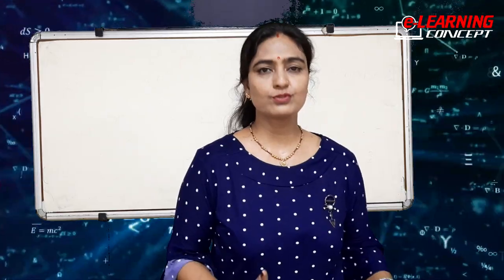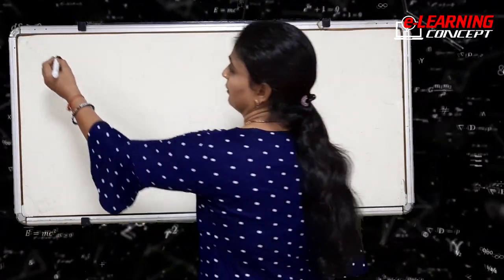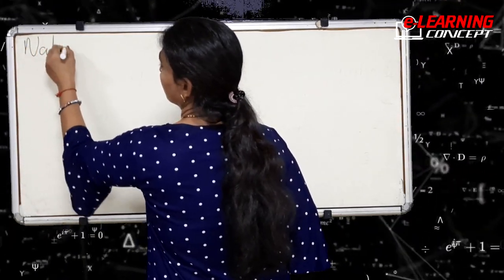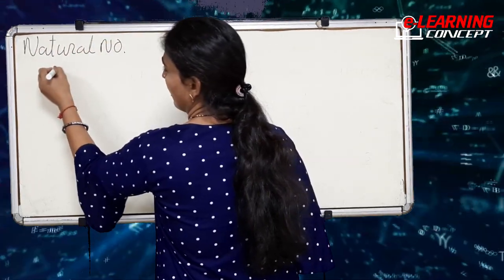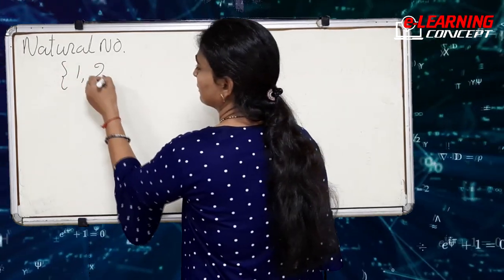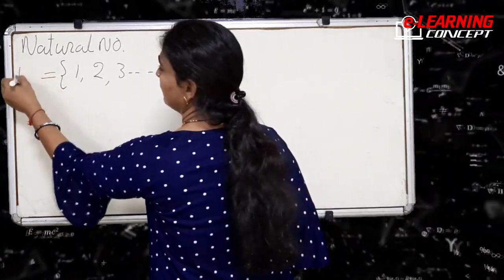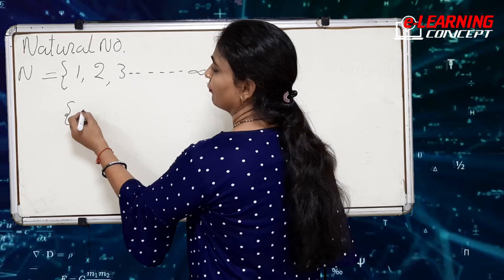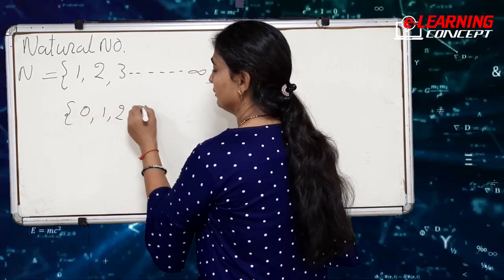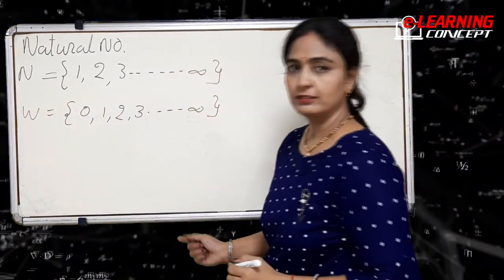In mathematics, we can define natural numbers as a set of numbers which start from one and go up to n. It is denoted by capital N. If we add zero to the set of natural numbers, we get a new set of numbers which is called whole numbers.